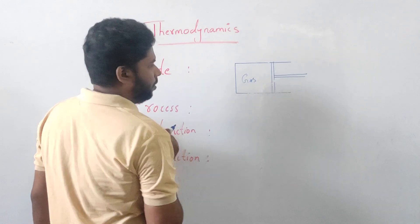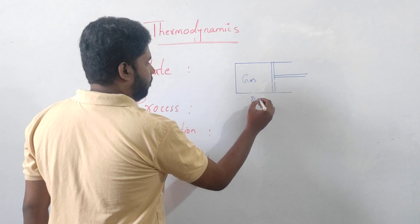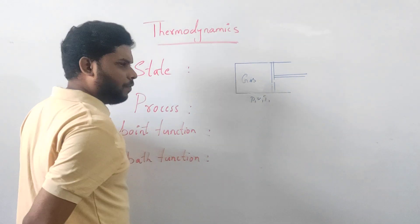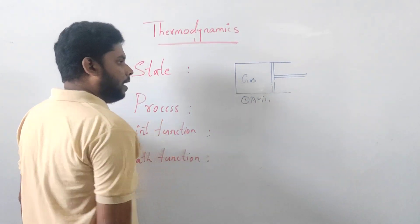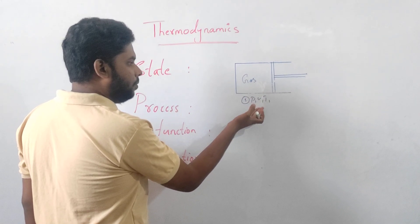Here we have gas in the cylinder. Now look at the first state - pressure P1, volume V1, temperature T1. This is the first state. The system condition - the gas temperature, volume, and pressure - we call state.